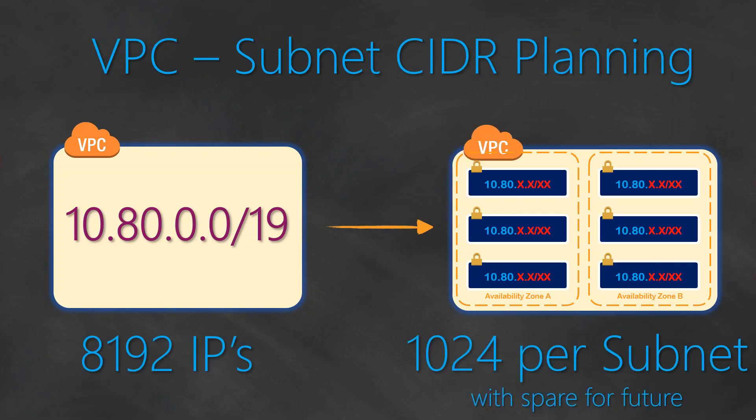Let's say, for example, the whole range is giving you about 8,000 IP addresses, but you want to split them into a subnet of 1024 IP addresses and also keep some of the IP addresses for future usage. How do you go ahead and split them?